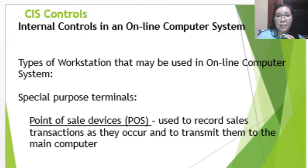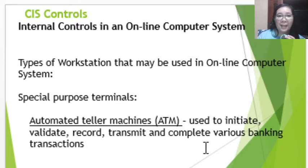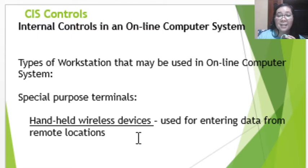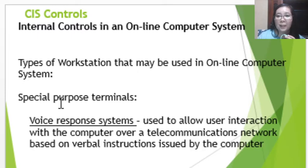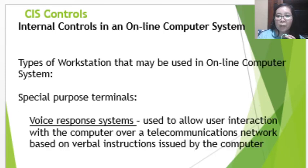POS devices are used to record sales transactions as they occur and transmit them to the main computer — commonly seen at cashier counters in department stores or grocery stores. Automated Teller Machines (ATMs) are used to initiate, validate, record, transmit, and complete various banking transactions. Handheld wireless devices are used for entering data from remote locations. Voice response systems allow user interaction with a computer over a telecommunications network based on verbal instructions issued by the computer.